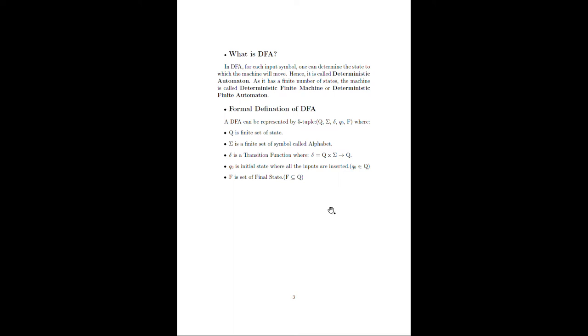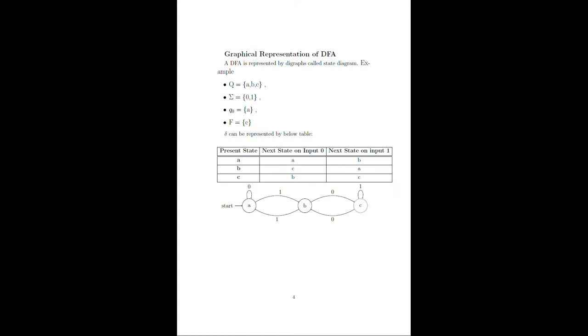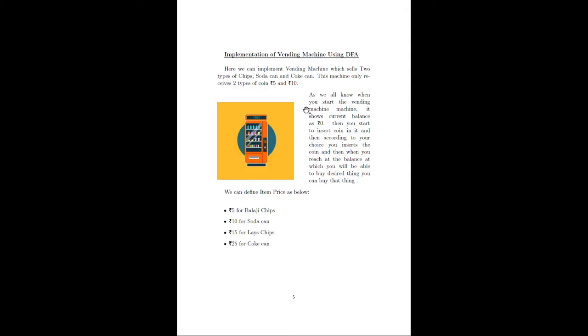Now let's take a small example. The DFA is represented in diagrams called state diagrams. In this example, Q equals {A, B, C} and Sigma equals {0, 1}. A, B, C are the states of the machine and 0 and 1 are input symbols. Q₀ is A, meaning A is the starting state, and F equals C, meaning C is a final state. We give relations according to this table you can check. Now moving toward our main example.